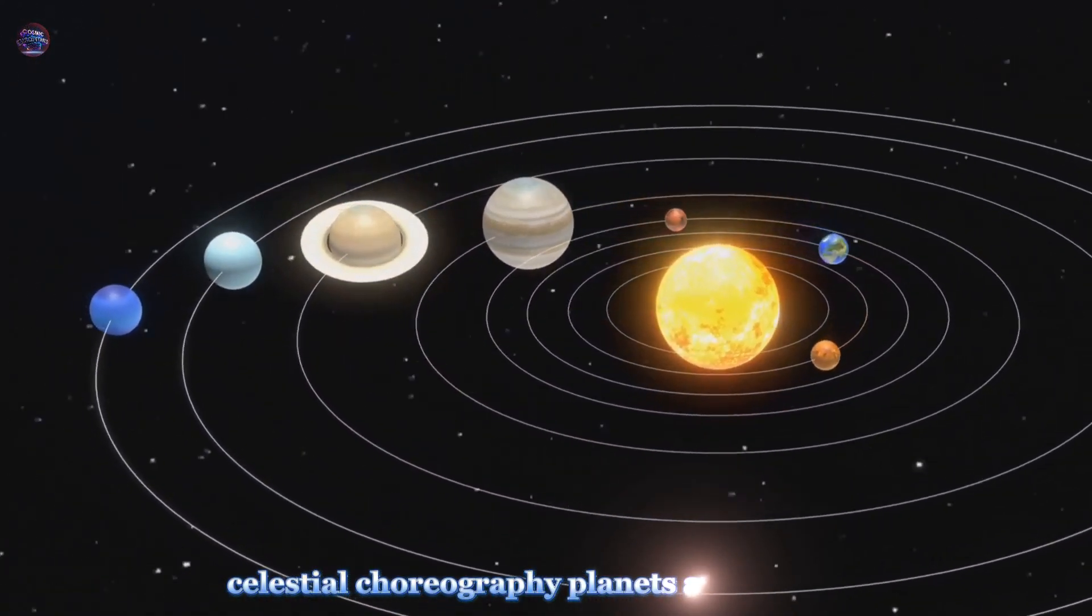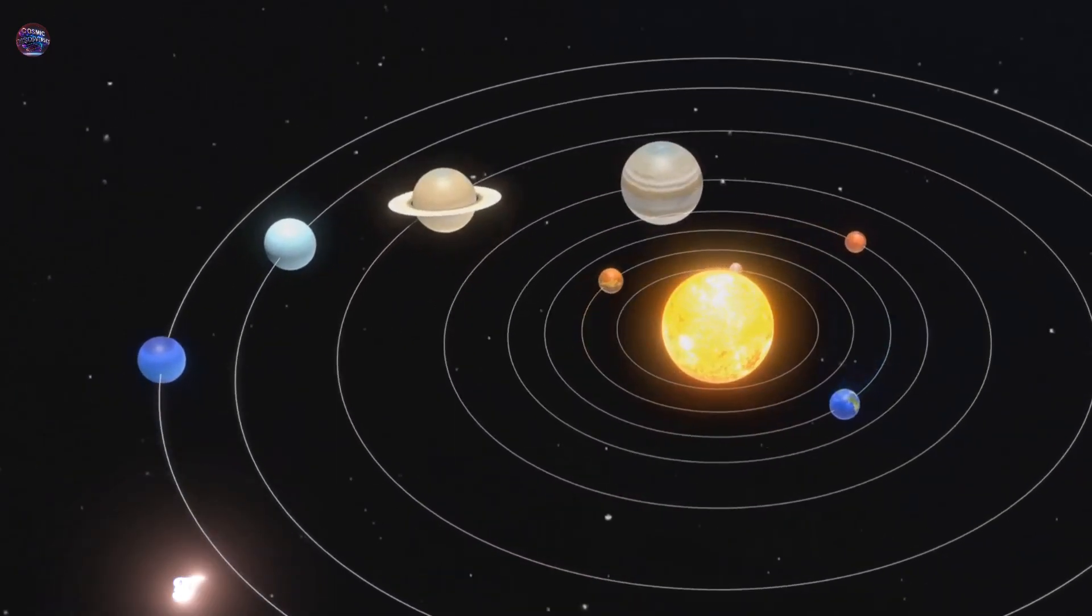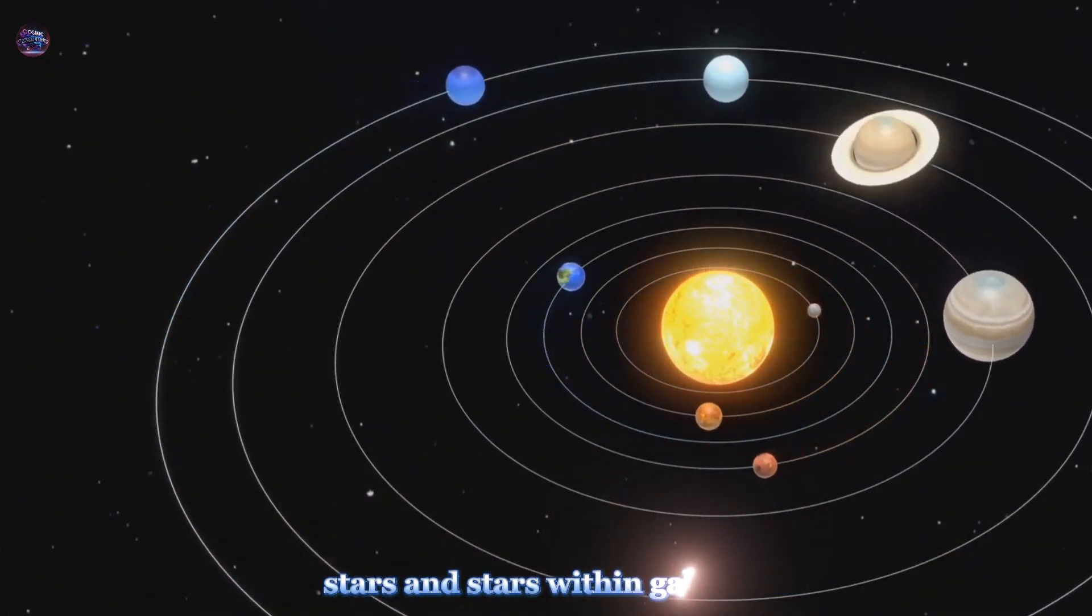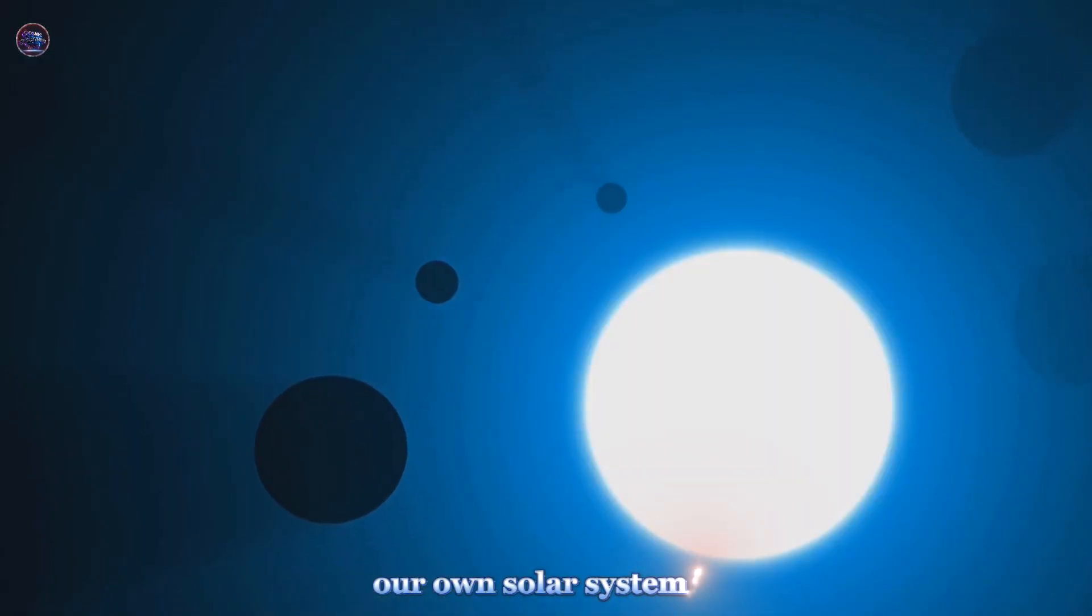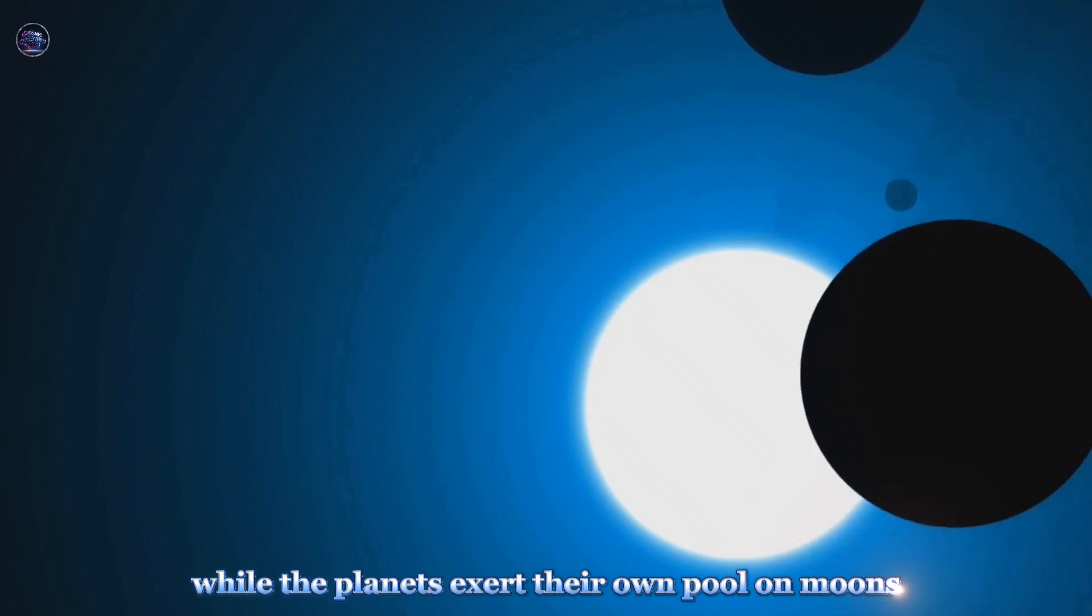Celestial Choreography: Planets and Galaxies. On a grander scale, gravity orchestrates the motions of planets around stars and stars within galaxies. Our own solar system is a prime example of gravity's power. The sun's immense gravity holds the planets in their orbits, while the planets exert their own pull on moons and other objects.